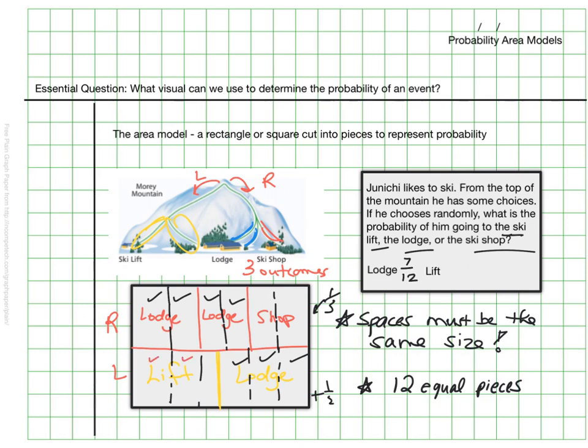There are one, two, three sections for the lift, so that means it is three out of 12 for the lift. And there are two sections here for the shop, so that means the probability is two out of 12 for the shop. So that's one way I could figure out the probability: a seven-twelfths chance of ending up at the lodge, three-twelfths at the lift, and two-twelfths to the shop.